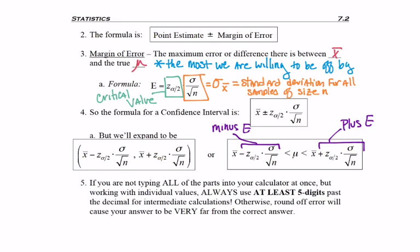And one super important thing, if you cannot type this whole thing into your calculator as one long formula, then remember to use a minimum of five digits past the decimal if you are writing out intermediate calculations. If you don't do that, you'll find that your answer is going to be extremely far from the true answer.